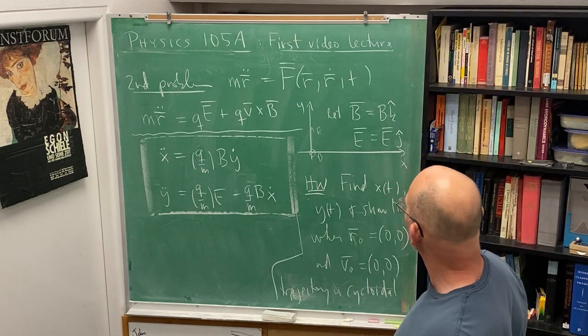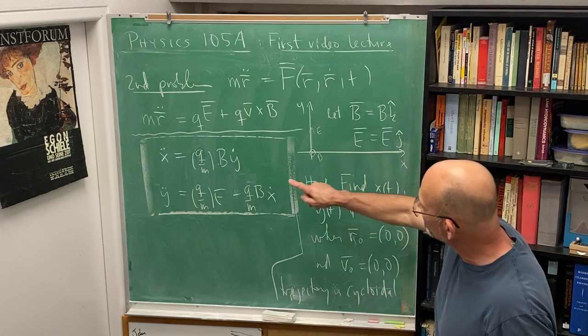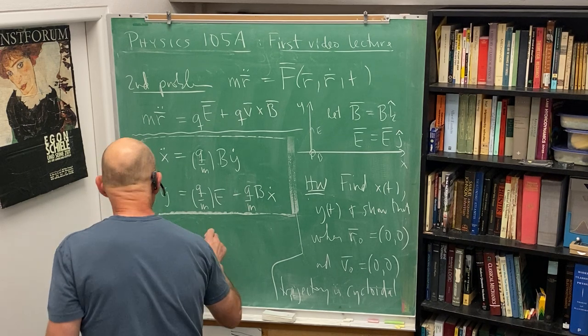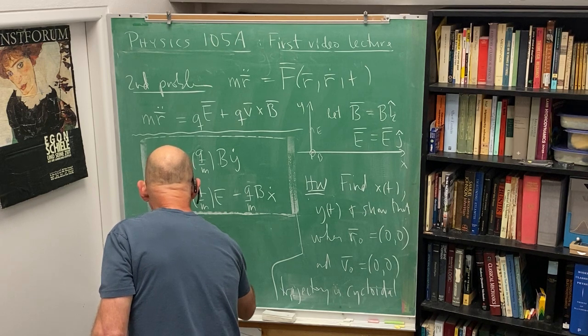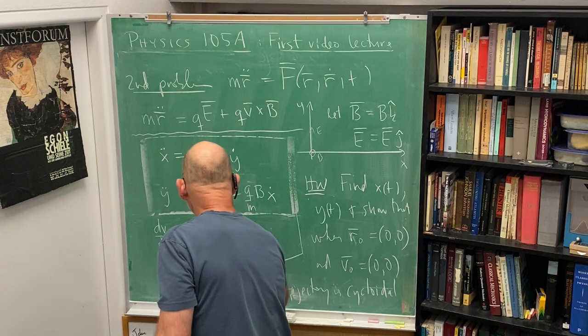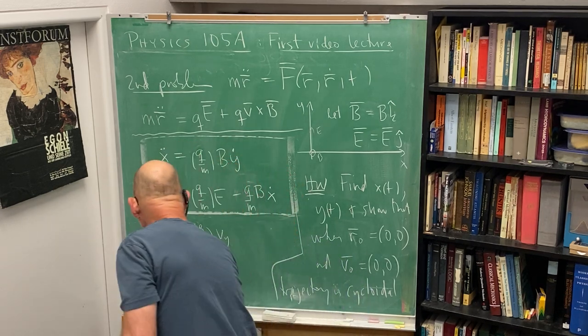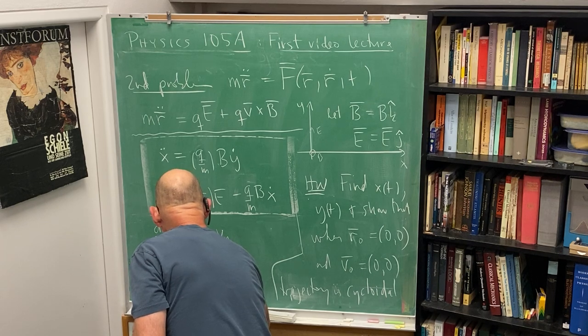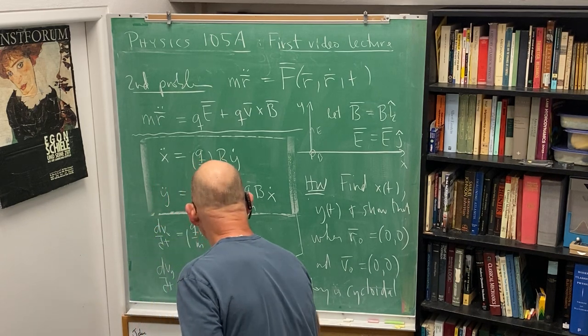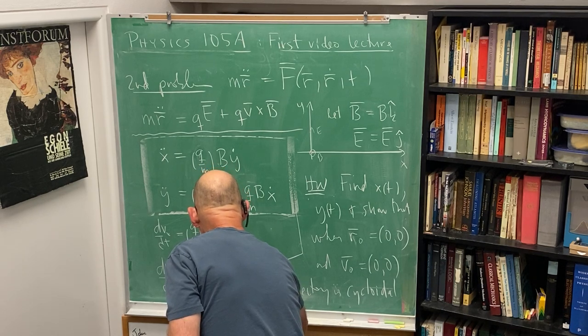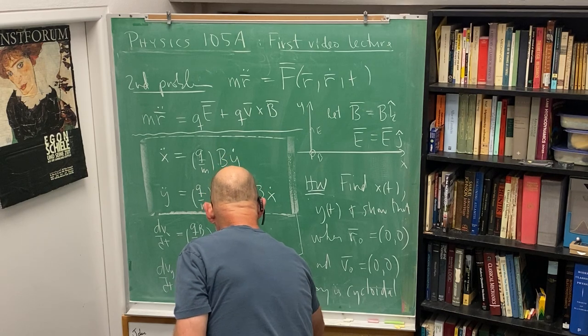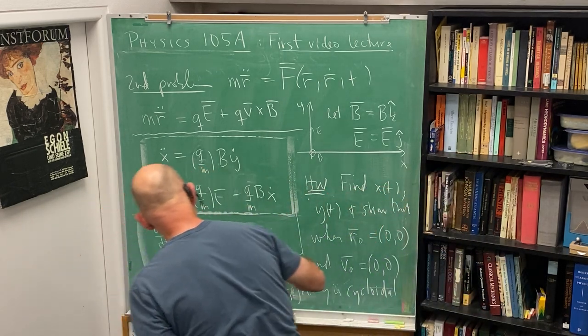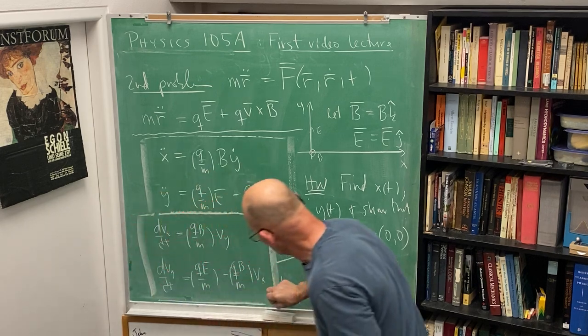To get started on this, we'll use this little corner of the board. Let's write this as dvx/dt is equal to qB over m times vy, and the second equation, dvy/dt is equal to qE over m minus qB over m times vx. So this here is nice. The derivative of vx is proportional to vy, derivative of vy proportional to vx.